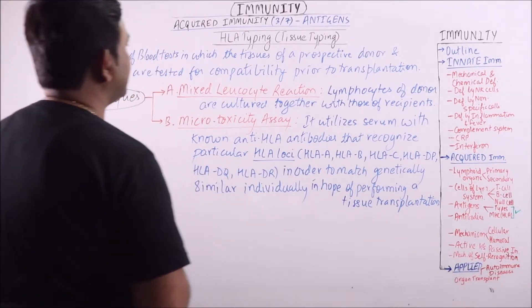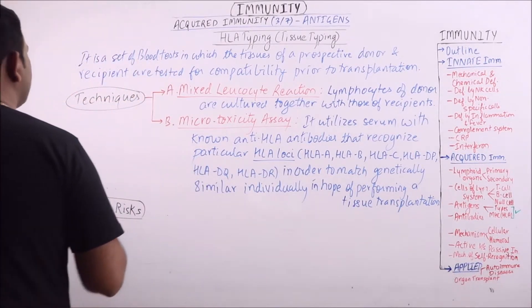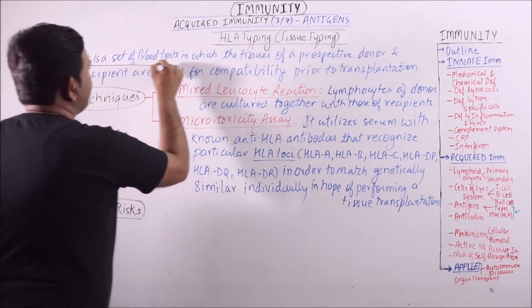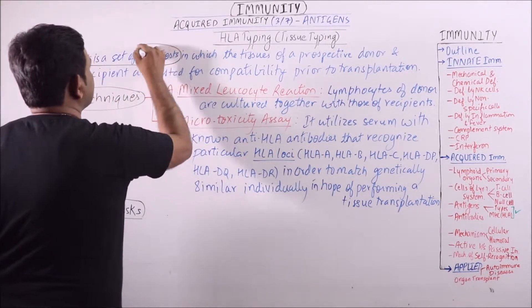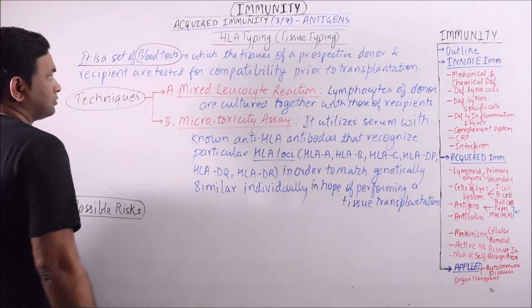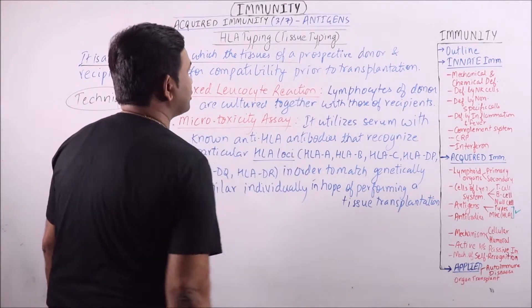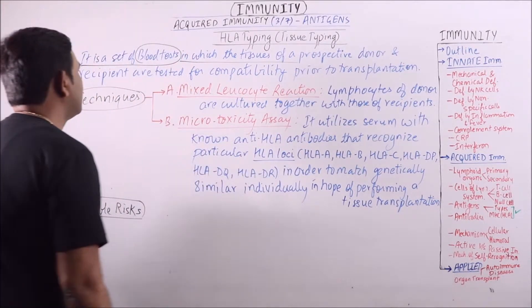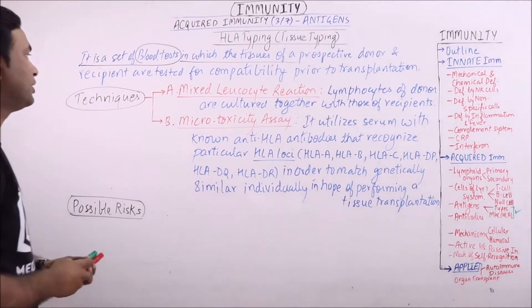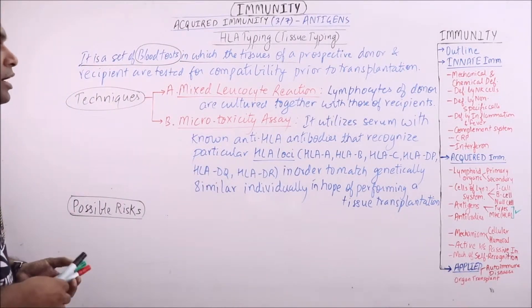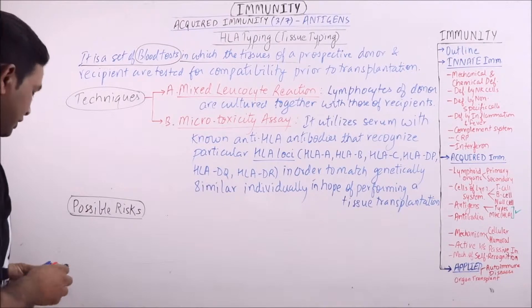We will discuss the HLA typing just in brief. It is a set of blood tests in which the tissues of a prospective donor and recipient are tested for compatibility prior to transplantation.